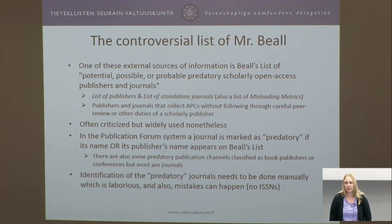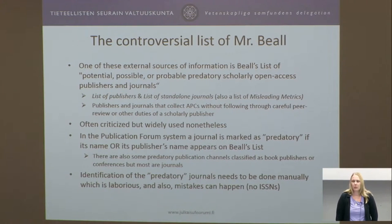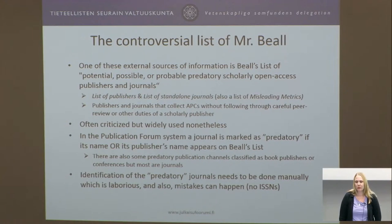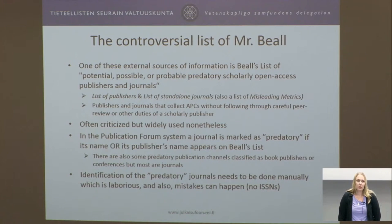Beale's list is actually two lists — there are separate lists for publishers and standalone journals. He also has a list of misleading metrics. By predatory, he means publishers and journals that collect article processing charges — an open access funding model — without following through with careful peer review or other duties of a scholarly publisher. There is a list of criteria on his blog where it can be found.